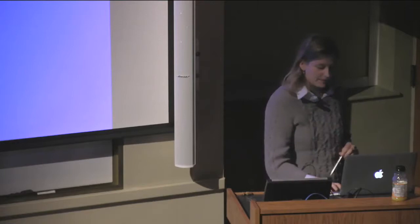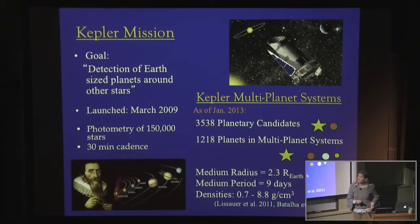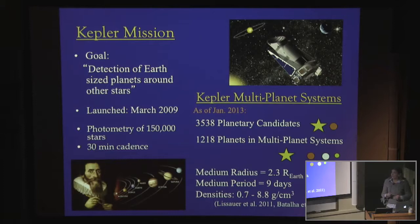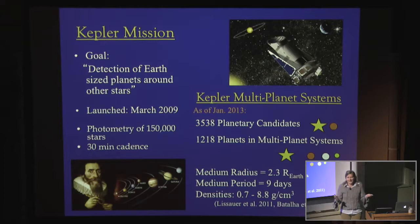The goal of the Kepler mission was to detect Earth-sized planets around other stars. It was launched in 2009 and has been taking photometric measurements of more than 150,000 stars with a 30-minute cadence. It's returned more than 4,000 planetary candidates. One of the truly exciting things that came from it is that many planets reside in multiple-planet systems — more than 1,000 planetary candidates are in a system that has another planet in it. They really like to have company.